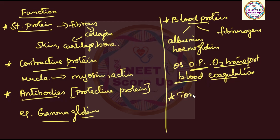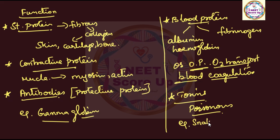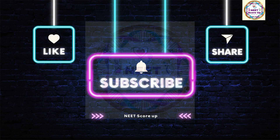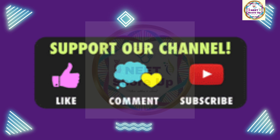The next type is toxins. Toxins are a type of poisonous protein, found in poisonous insects and poisonous reptiles. That's all about protein classification. Thank you students for supporting our channel — keep supporting, subscribe, share, like, and comment, and share with your friends.